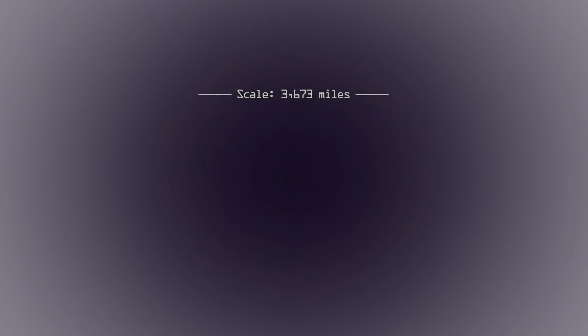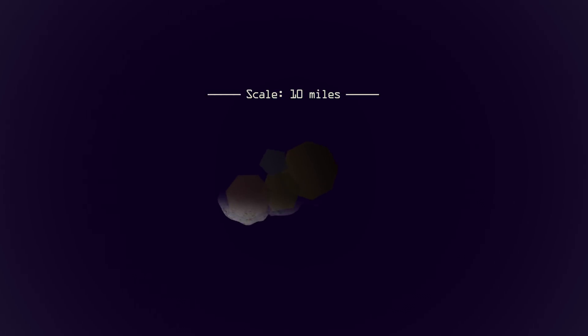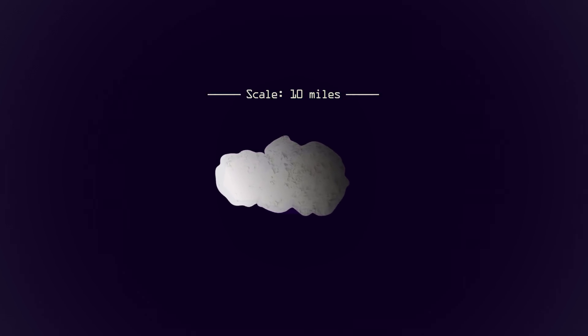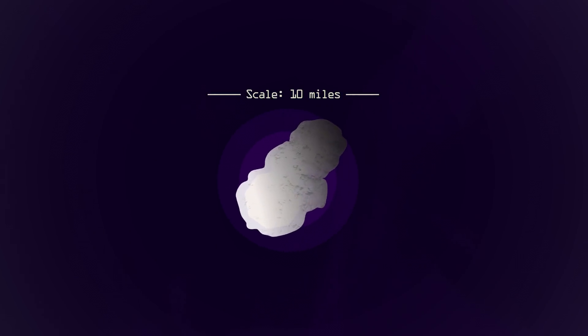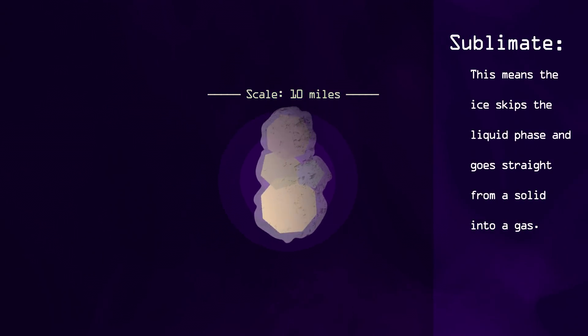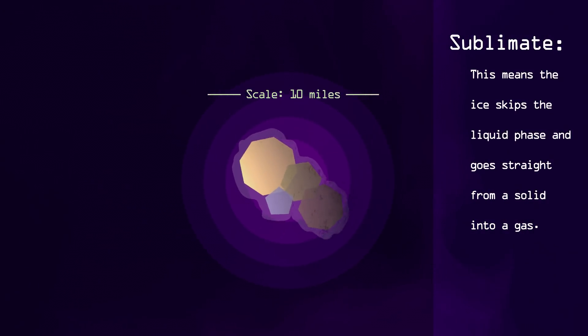Up close, a comet is just a pile of extremely dark, dusty rocks held together by frozen gases and water. As a comet's orbit takes it closer to the sun, it transforms into something far more beautiful. The sun warms the frozen ice of the comet. The heat causes the ice to melt, or rather, sublimate. This means the ice skips the liquid phase and goes straight from solid into gas.